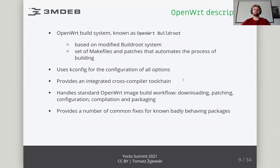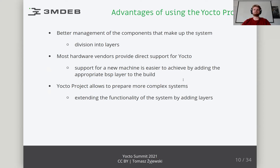The OpenWrt development environment and build system, known together as OpenWrt BuildRoot, are based on a heavily modified BuildRoot system — a set of makefiles and patches that automates the process of building a complete Linux-based OpenWrt system for an embedded device by building and using an appropriate cross-compilation toolchain. Since the OpenWrt build system is actually a kind of BuildRoot on steroids, trying to settle the dispute over which build system is better can be boiled down to the BuildRoot versus Yocto discussion.